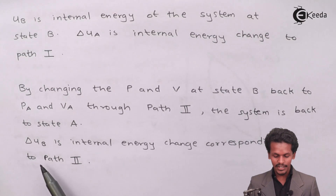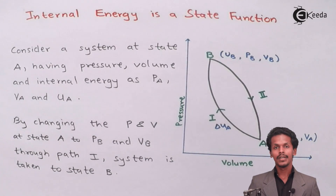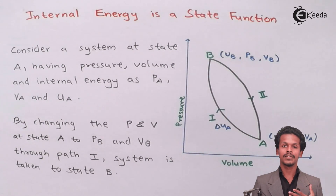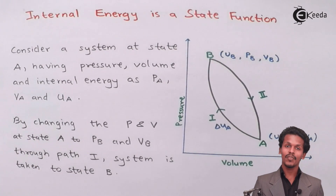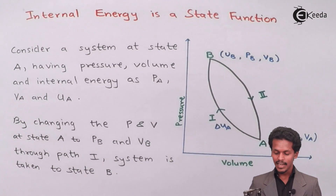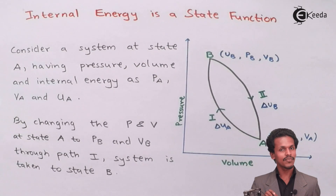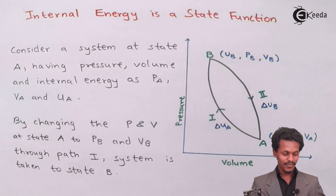Delta U_B is the internal energy change corresponding to Path 2. When we had internal energy U_B at State B and we perform the change from U_B back to U_A through Path 2, the change in internal energy is represented as delta U_B. So delta U_A and delta U_B are represented differently — one for Path 1, the other for Path 2.